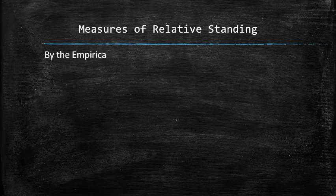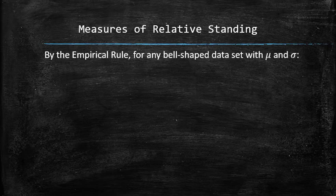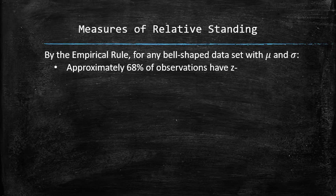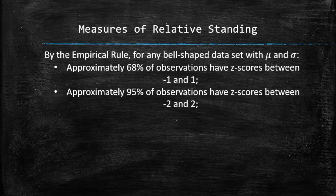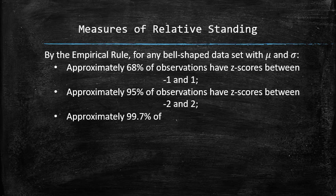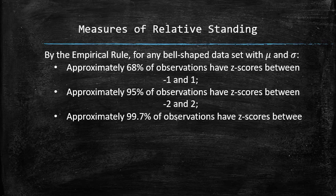By the empirical rule, for any bell-shaped data set with mean mu and standard deviation sigma, approximately 68% of observations have z-scores between negative 1 and 1, approximately 95% of observations have z-scores between negative 2 and 2, and approximately 99.7% of observations have z-scores between negative 3 and 3.